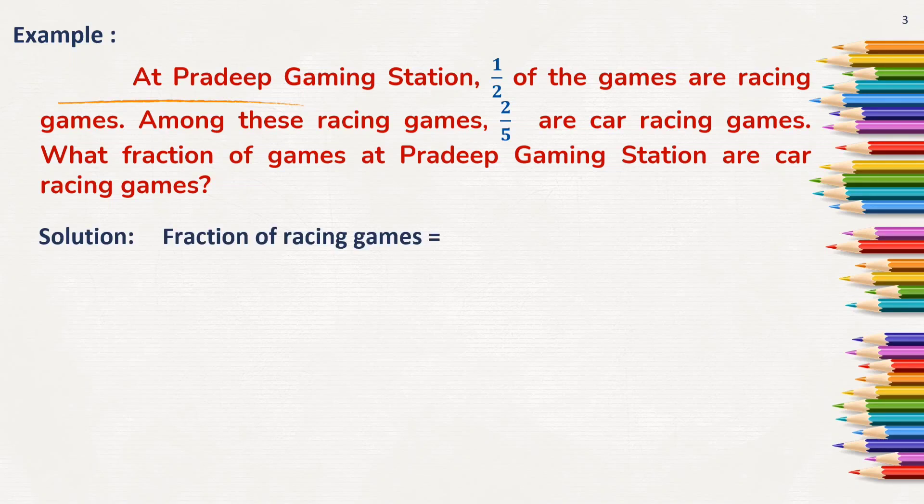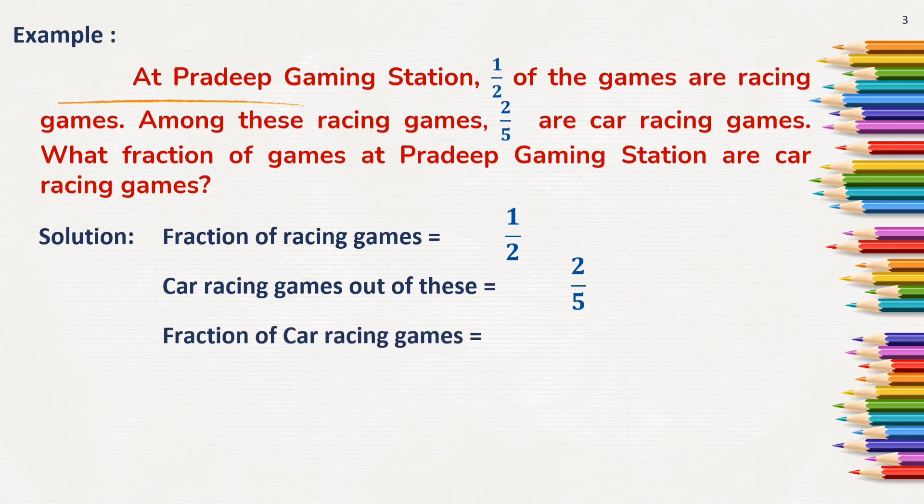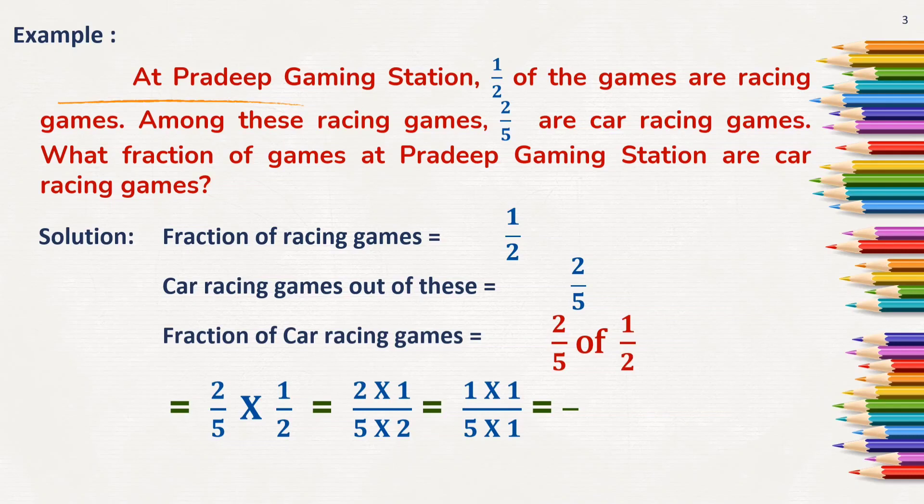Fraction of racing games is 1 by 2 and car racing games out of these is 2 by 5. Fraction of car racing games we will have to find out. So, 2 by 5 of 1 by 2. So, here 2 by 5 into 1 by 2 which is equal to 2 into 1 by 5 into 2.